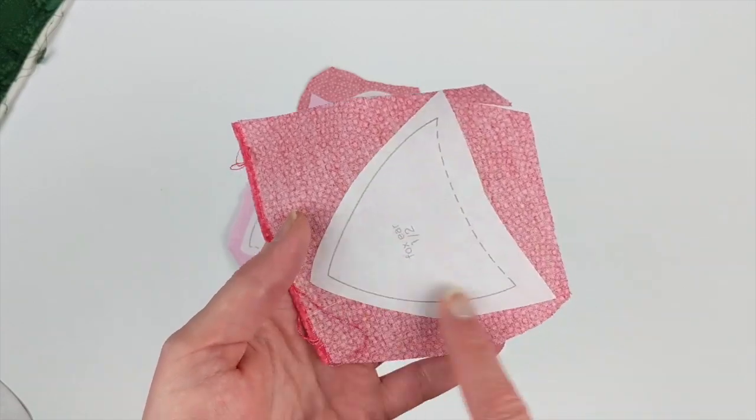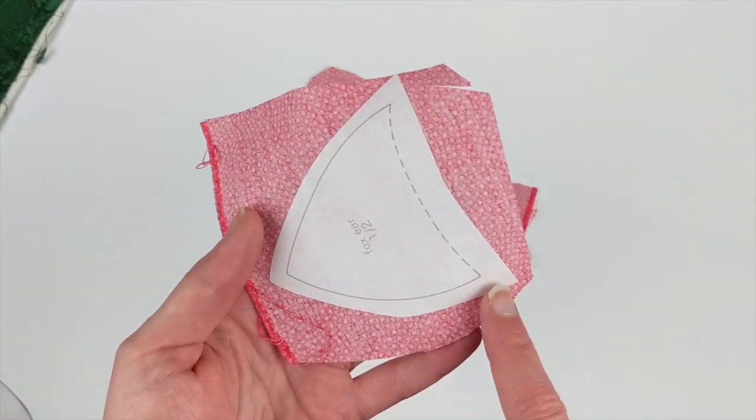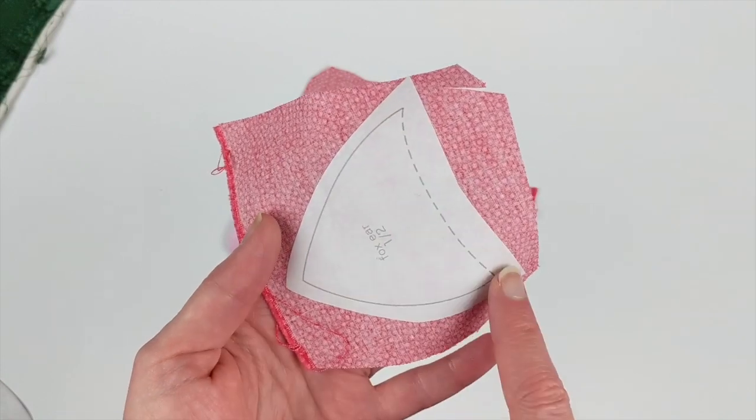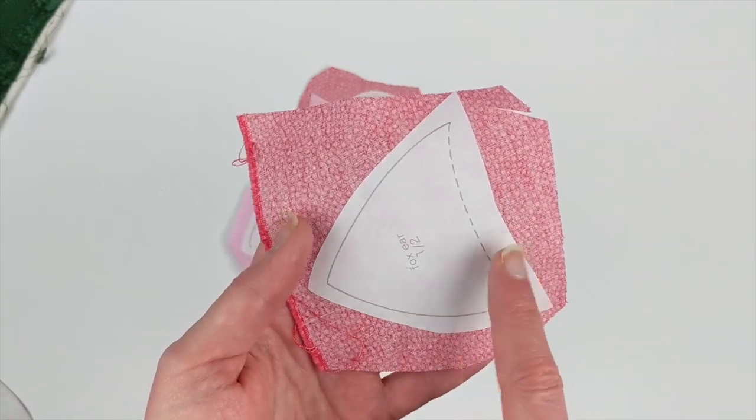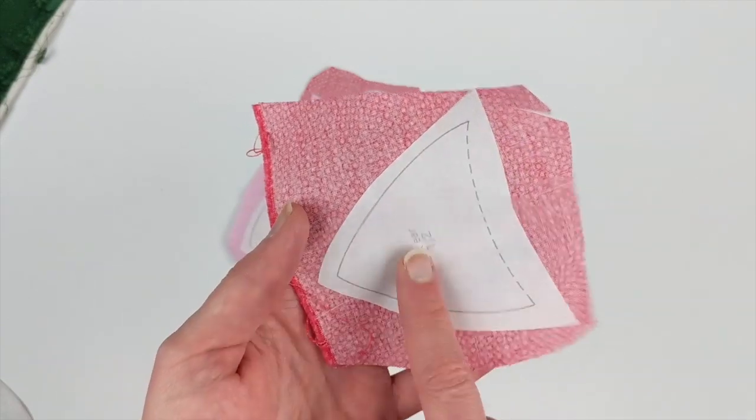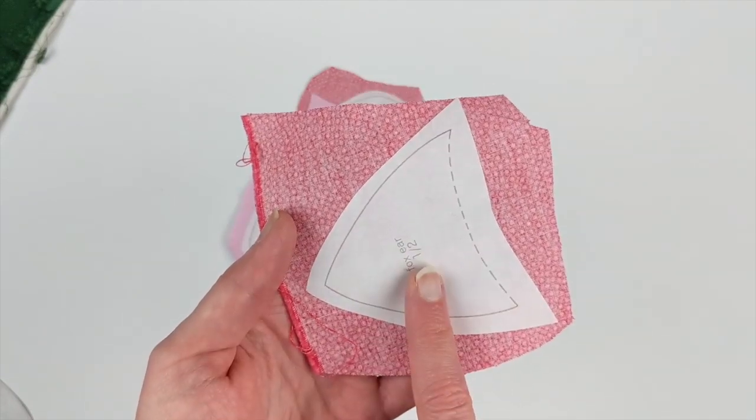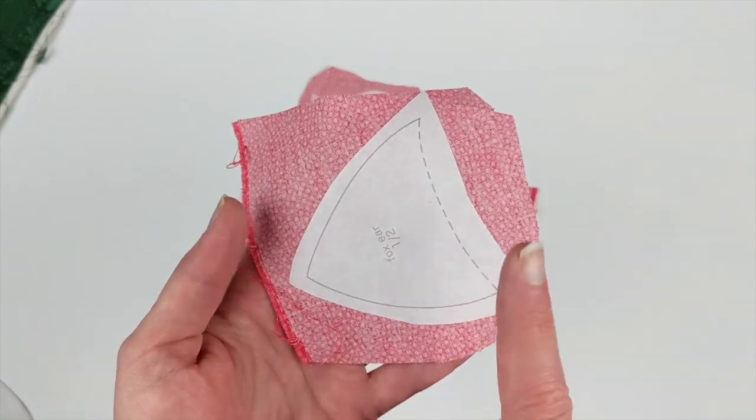When you cut out the pieces, you're going to cut them out roughly, that is, leaving a little extra room all the way around. And you want to leave a little extra room wherever there's a dashed line and I'll talk about that in a second. But trace or print the pattern onto the paper side of your fusible adhesive, roughly cut it out.